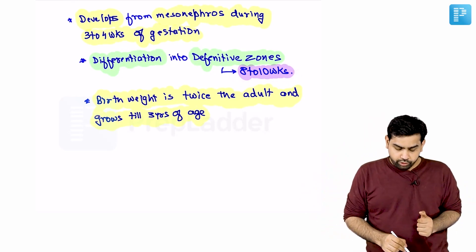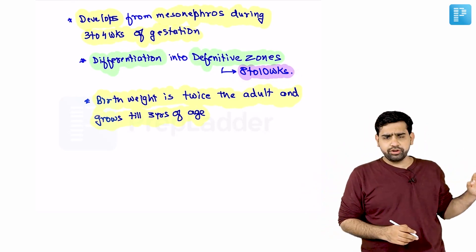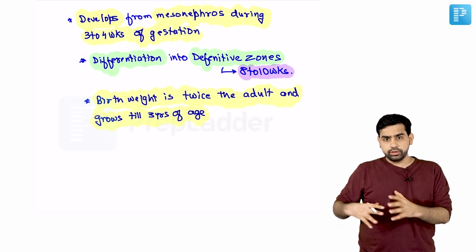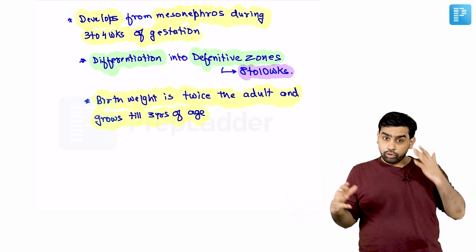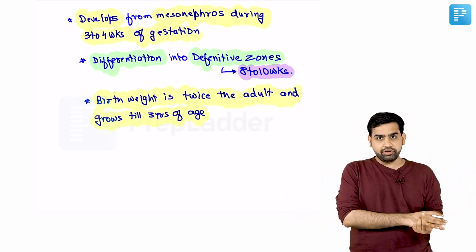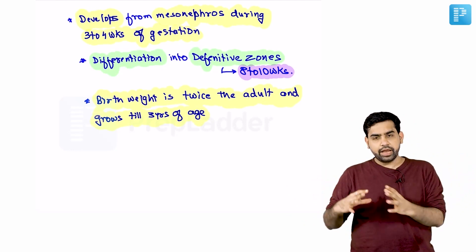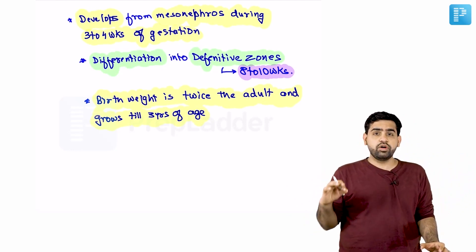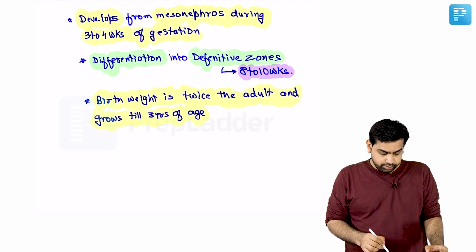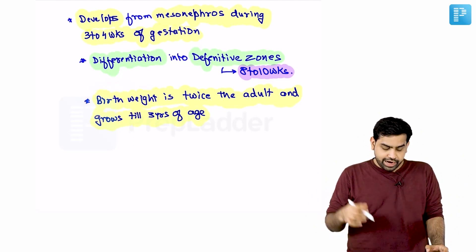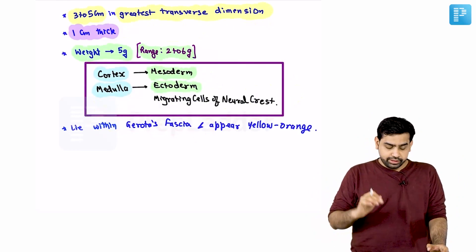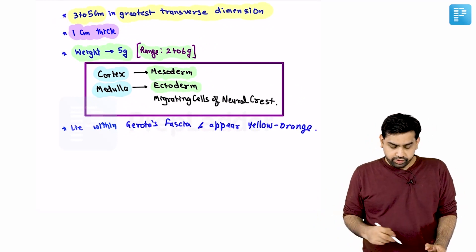At birth, the size of the adrenal gland is close to twice that of an adult — this is really important. When the child is born, the adrenal glands are of a bigger size, and because of that there is a possibility that hemorrhage can occur in this adrenal gland. To detect that, we have ultrasonography, which is one of the good investigations to look for hemorrhage inside the adrenal gland. The birth weight of the adrenal gland is around twice that of an adult and it grows till around three years of age.